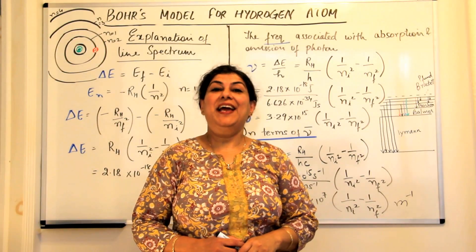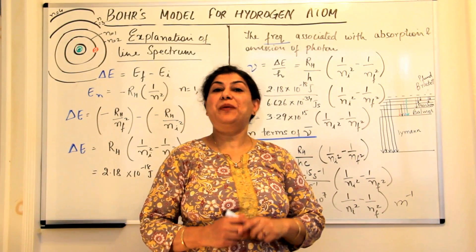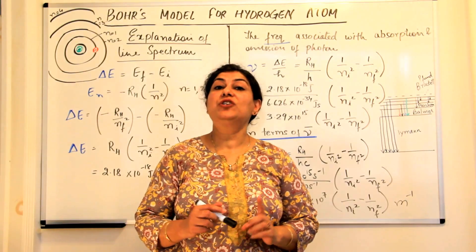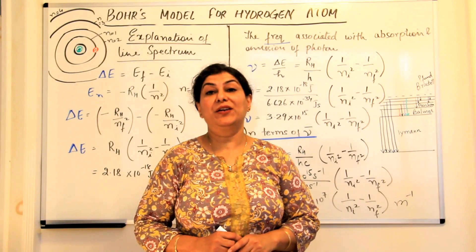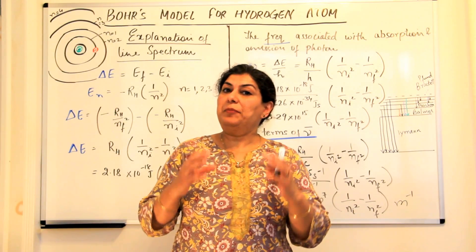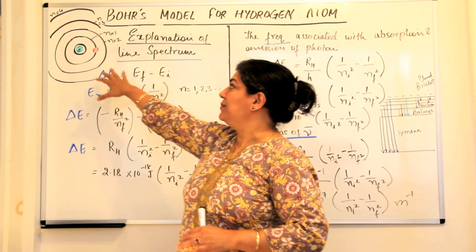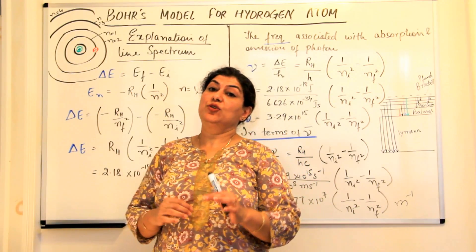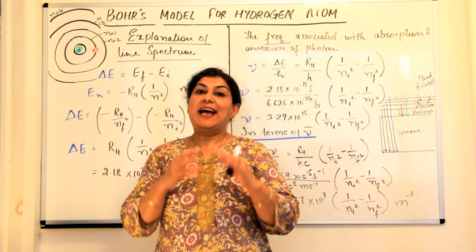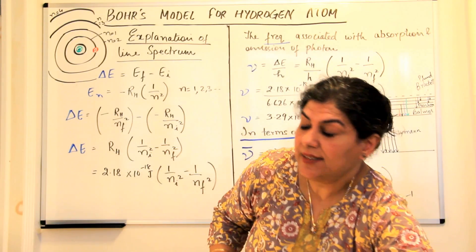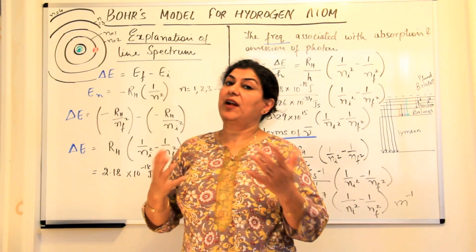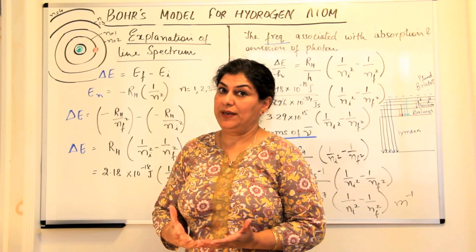I am Seema, and welcome to part three of the videos titled Bohr's Model for Hydrogen Atom. Bohr had given his model of atom where he assumed that the nucleus is positively charged and is in the center, and the electrons revolve in fixed orbits around the nucleus.